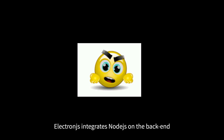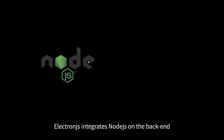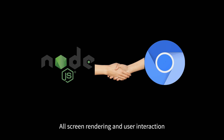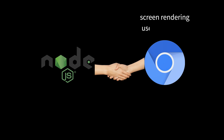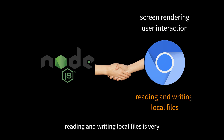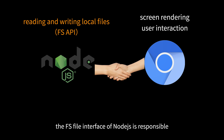Put it simply, Electron.js integrates Node.js on the backend and Chromium on the front end. All screen rendering and user interactions are handled by Chromium, which is almost a browser. However, web page code in the browser for reading and writing local files is very limited, so the FS interface of Node.js is responsible for that.